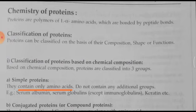Classification of proteins: proteins can be classified on various bases. We will discuss classification based on composition, shape, and function. Based on chemical composition, proteins are classified into three groups. Simple proteins, as the name indicates, are simple in nature — they contain only the basic component, which is amino acids. They do not contain any additional group. Examples include serum albumin, serum globulin, and keratin.